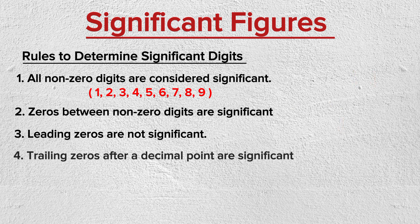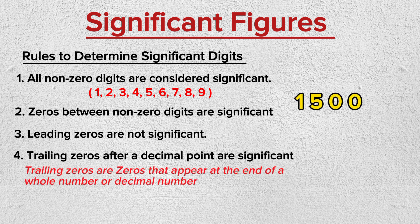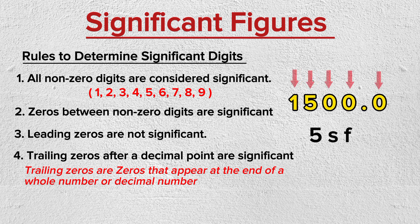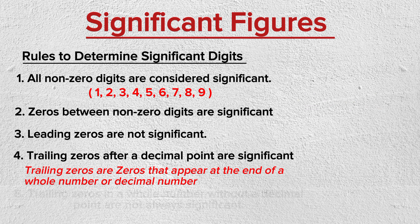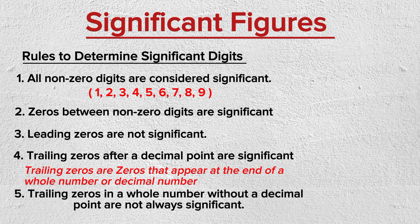Rule 4: Trailing zeros after a decimal point are significant — trailing zeros only count if there's a decimal. For example, 1500 has two significant figures, but 1.5000 has five. Trailing zeros are zeros that appear at the end of a whole number or decimal number. Rule 5: Trailing zeros in a whole number without a decimal point are not always significant. For example, 2000 has one significant digit.